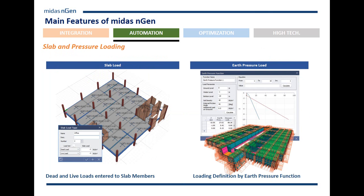For slab loads, you can apply them automatically by selecting by floor or the whole structure by type of element, and just specify the dead load and the live load. Similarly, for the substructure, it's very easy to apply earth pressure loads — you define the water level, ground level, and some soil properties, and the program will automatically consider these earth pressure loads.